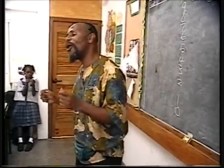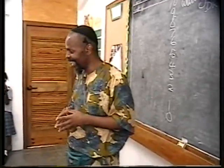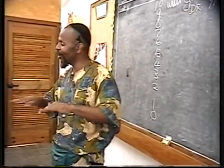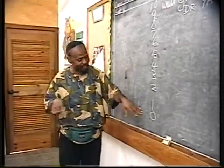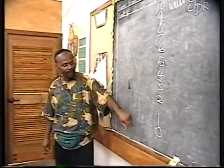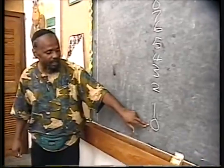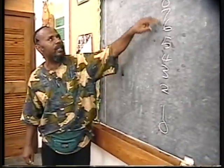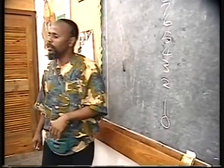Zero is the coolest number there is. That's why I say it like that — zero. Let me show you how cool zero is. Watch this. Because I started at zero, I can have one, two, three, four, five, six, seven, eight, nine, and then ten.